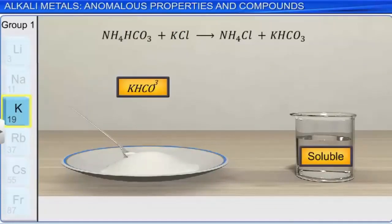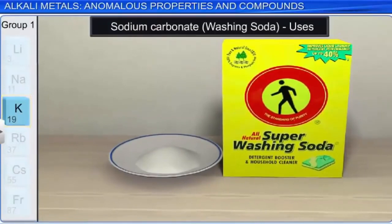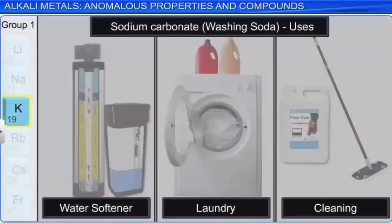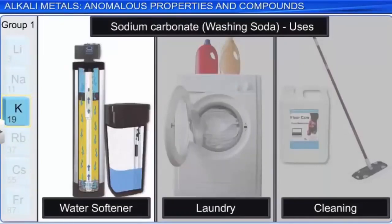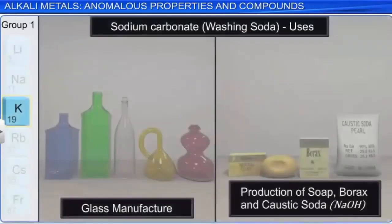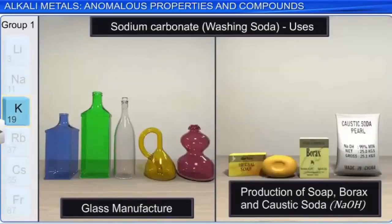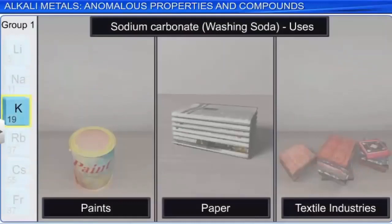Sodium carbonate has a variety of household and industrial uses. It is used in water softening, and in laundry and cleaning. It is used in the manufacture of glass and in the production of soap, borax, and caustic soda (sodium hydroxide). Sodium carbonate is also necessary in the paint, paper, and textile industries, and is used in a variety of analytical techniques in the chemical laboratory.